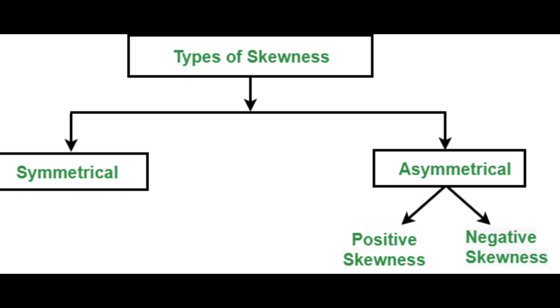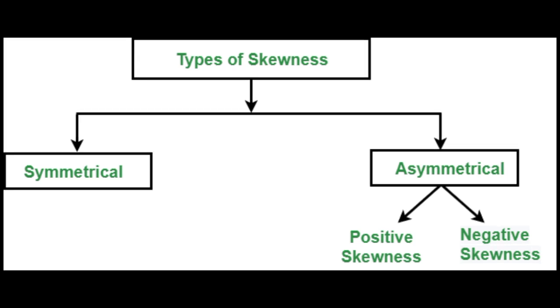In asymmetrical, we see two types: positive skewness and negative skewness. So basically, we have three types of skewness: positive skewness, negative skewness, and zero skewness, which we also call symmetrical skewness.